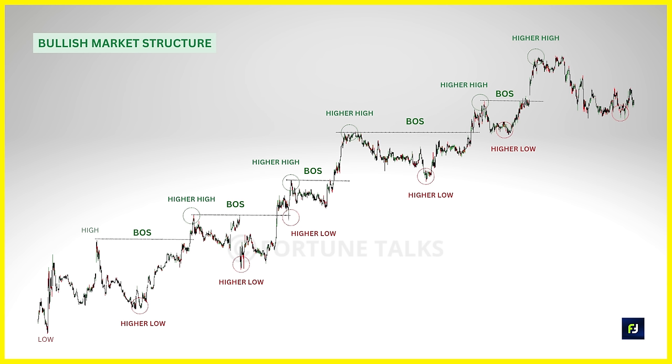When price breaks and closes above the previous lower swing high, it signals a change in sentiment — the first indication of a reversal from bearish to bullish. This shift is called a Change of Character. We then change our perspective and look for a bullish structure or a sideways market structure. The sideways market structure is associated with accumulation or distribution phases — where big institutions start building their positions (accumulation) or start selling their holdings (distribution).